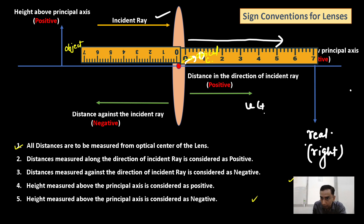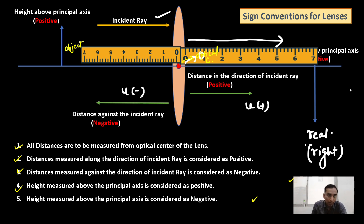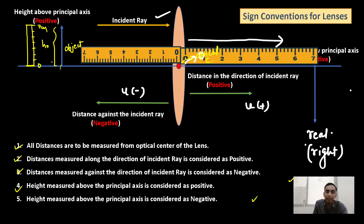For real images, V would be positive and the object distance u would always be negative. Now, height above the principal axis is considered to be positive. If I am asked to measure the height of the object, I place the scale with 0 on the principal axis. Suppose it is 7 centimeters — since we are measuring in the upward direction, the height of the object is positive.